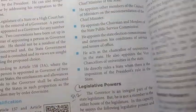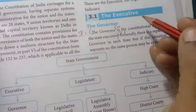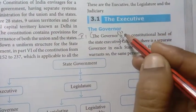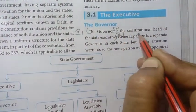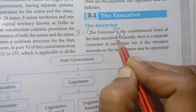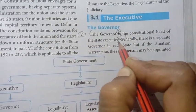Point one, page number 259, under the executive heading: the governor is the constitutional head of the state executive. This is the first point.